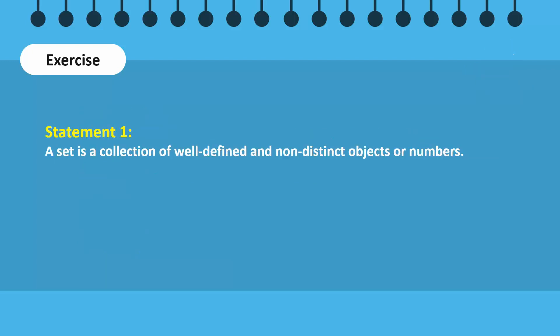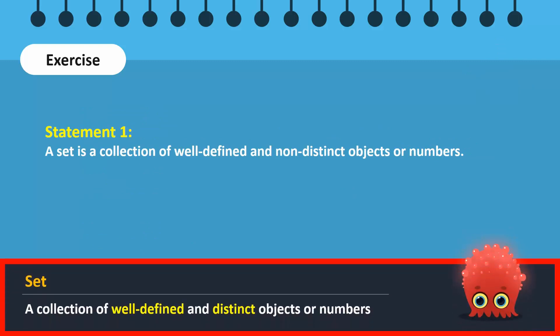Let us review. Recall that a set is defined by two key properties: well-defined and distinct objects. Non-distinct is not a correct property of sets. Therefore, this statement is incorrect.